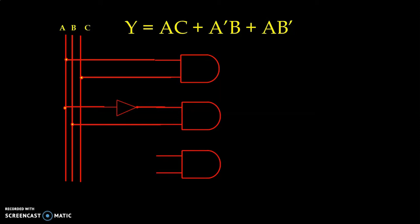For the third product term that is AB bar, so A is connected directly. For the B bar, we have used inverter.